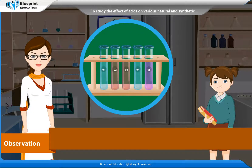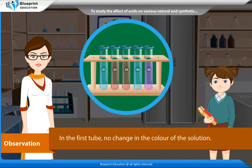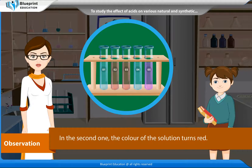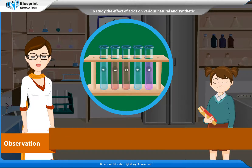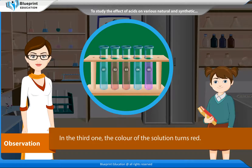Observations: In the first tube, there is no change in the color of the solution. In the second one, the color of the solution turns red. In the third one, the color of the solution turns red.